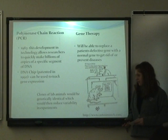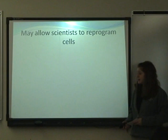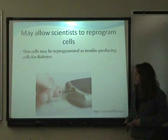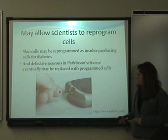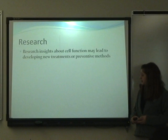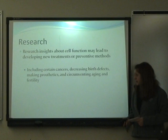The future of technology may enable scientists to reprogram different cells. Skin cells may be reprogrammed to act as insulin cells for diabetes, and defective neurons in Parkinson's disease eventually may be replaced with cells that will work. Insights about cell function may lead to developing new treatments or preventive methods, including for certain cancers, decreasing side effects, making prosthetics, and circumventing aging and fragility.